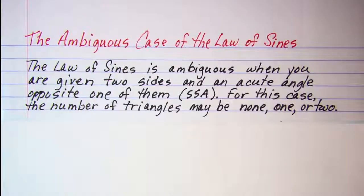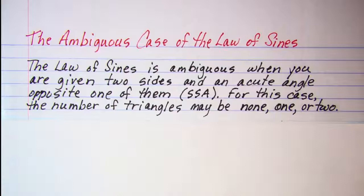In this video, we'll be talking about the ambiguous case of the Law of Sines. Now, the word ambiguous just means having several possible meanings. The Law of Sines is ambiguous when you're given two sides and an acute angle opposite one of them.